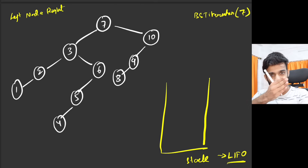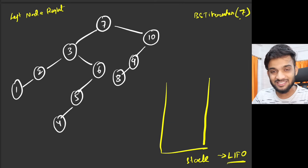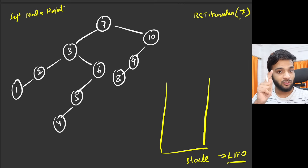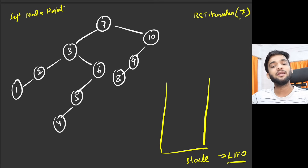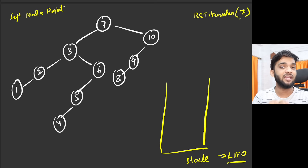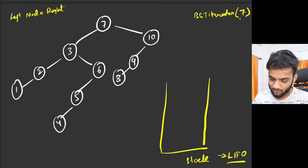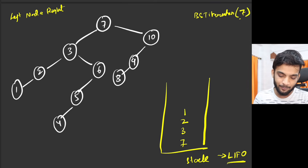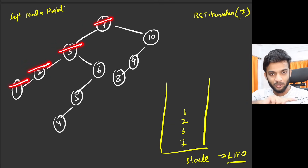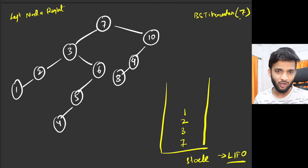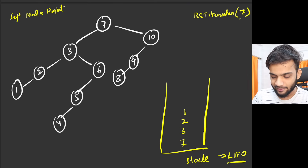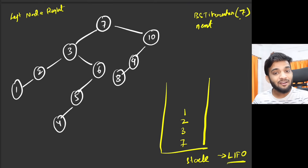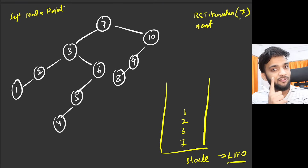To design this algorithm, you write a constructor. The constructor receives the root — initially seven. What you do is take a stack data structure (last in, first out). Whenever the BST iterator is initialized with root seven, you take the root and go to the extreme left, pushing everything onto the stack. So for a tree with nodes 7, 3, 2, 1 going left — you push seven, three, two, one. That is what you always do in the constructor.